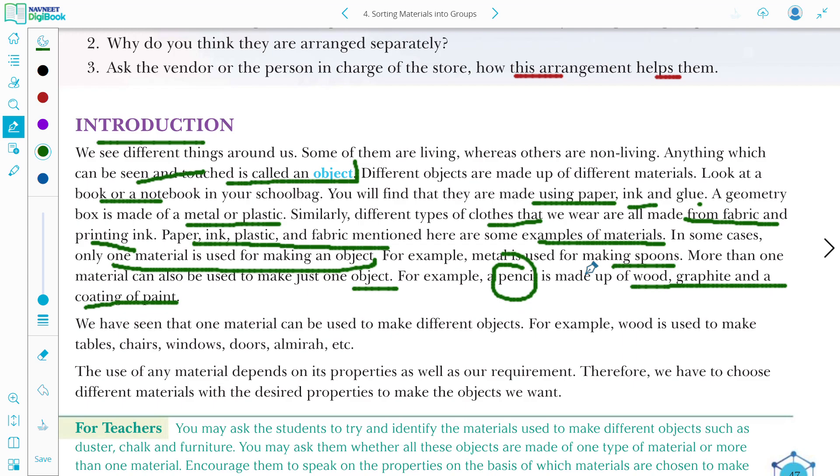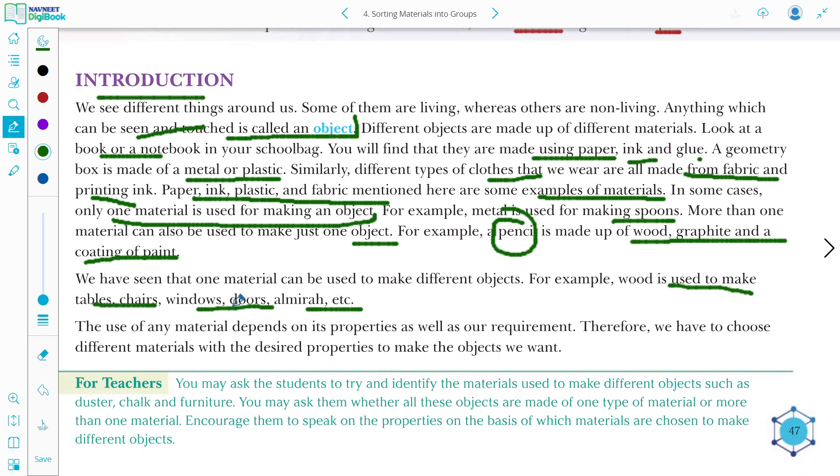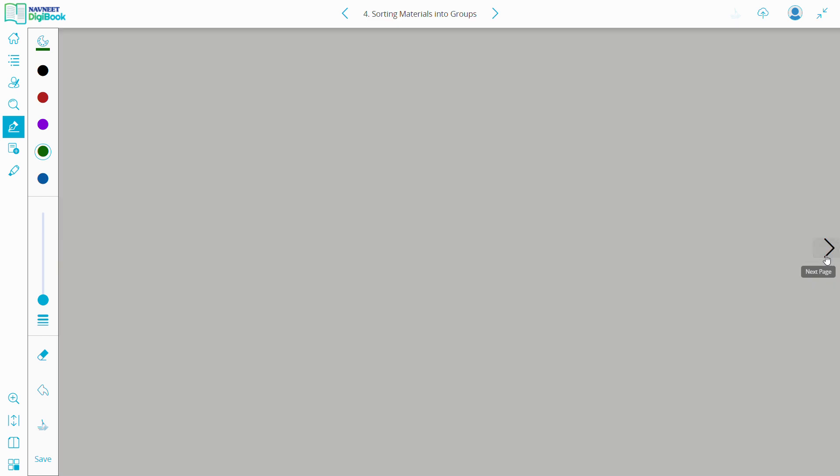We have seen that one material can be used to make different objects. For example, wood is used to make table, chair, window, door and almira. The use of any material depends upon its property. As well as our requirements. Therefore, we have to choose different materials with the desired properties to make the object we want. Hope so this introduction is clear.